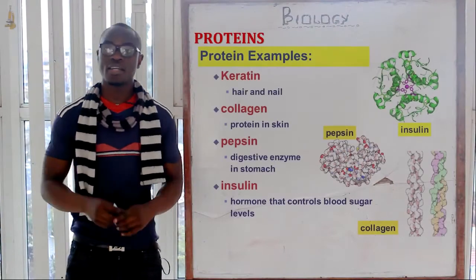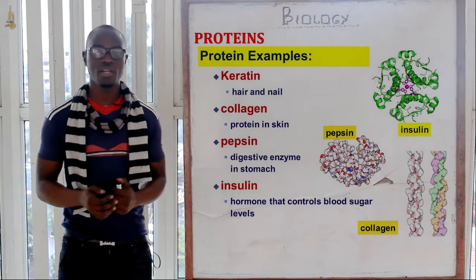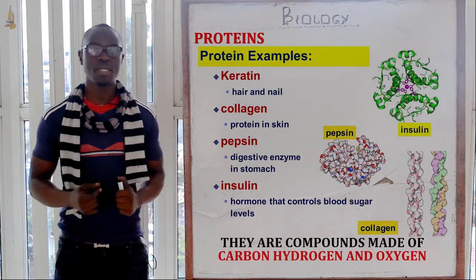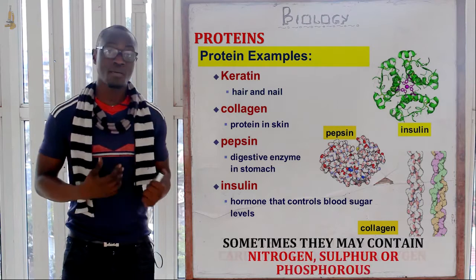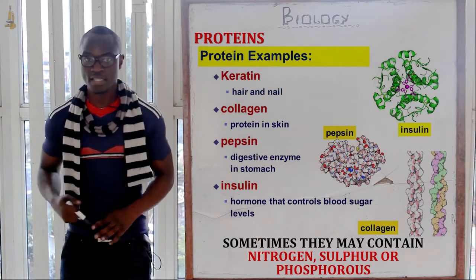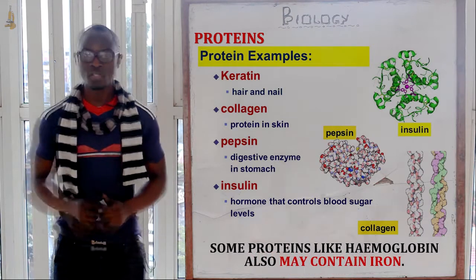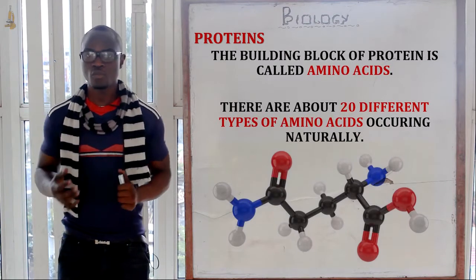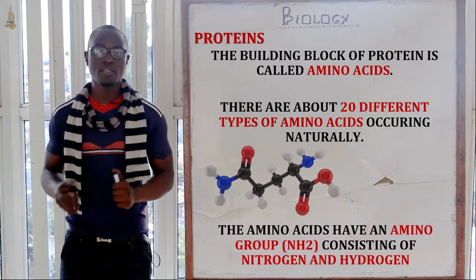Welcome to this class where today we will discuss proteins, then move into enzymes. Proteins are compounds mainly made up of carbon, hydrogen, and oxygen, whereby some proteins may also have nitrogen, phosphorus, or even sulfur. Hemoglobin is also a protein compound. Proteins are made up of amino acids, and we have 20 different types of amino acids.